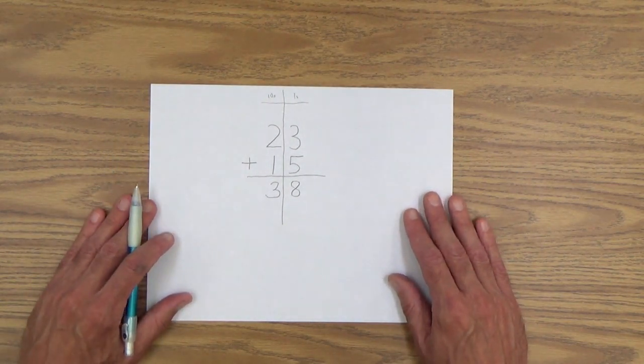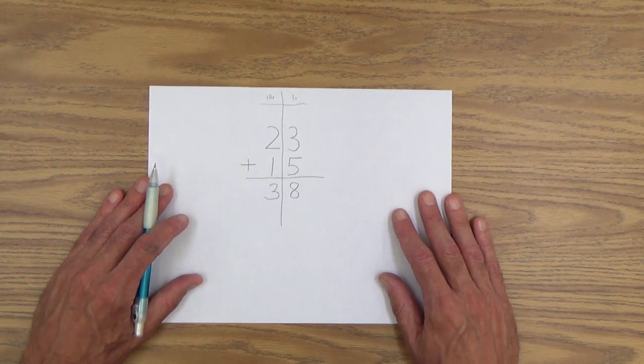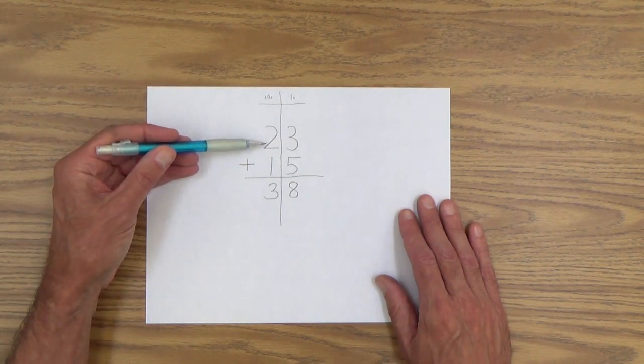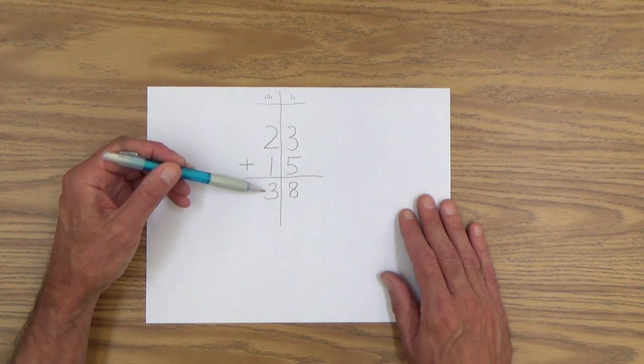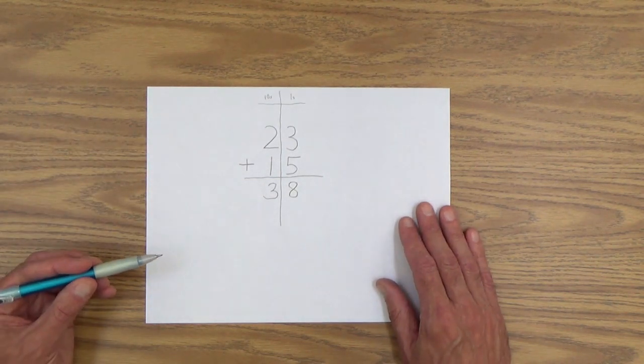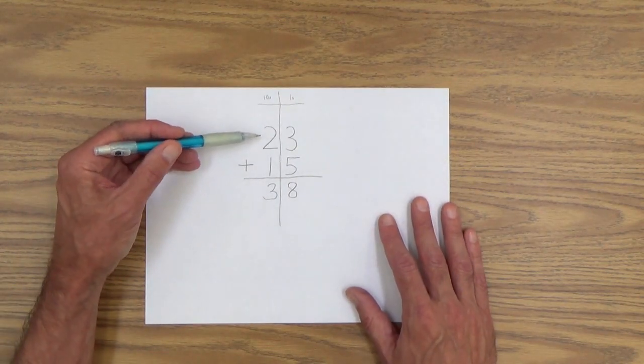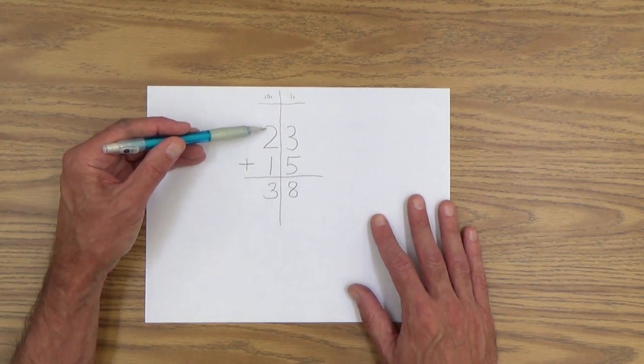Three. And then you could say, well, actually, two tens plus one ten equals three tens. Maybe that's a better way to put it. I made a little error there. Yes, you have to make it very clear that you're now adding tens.